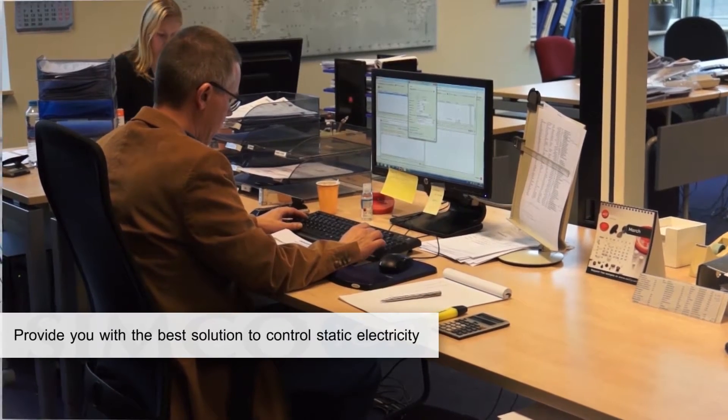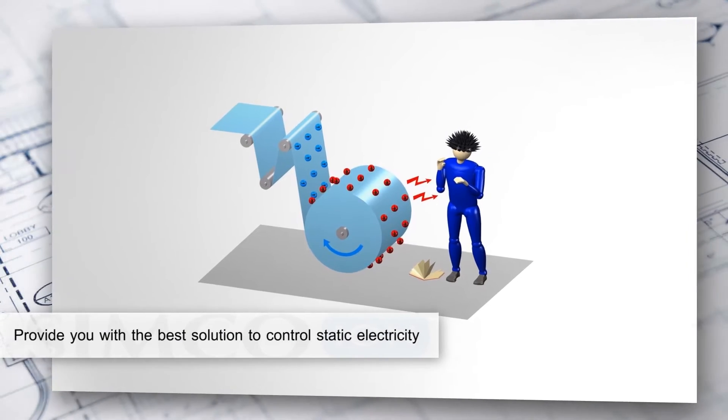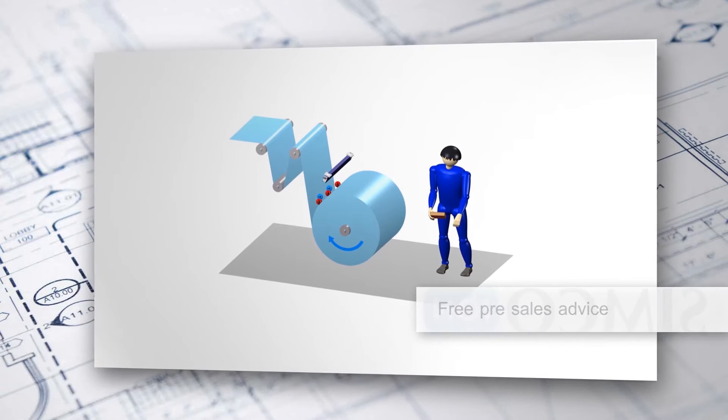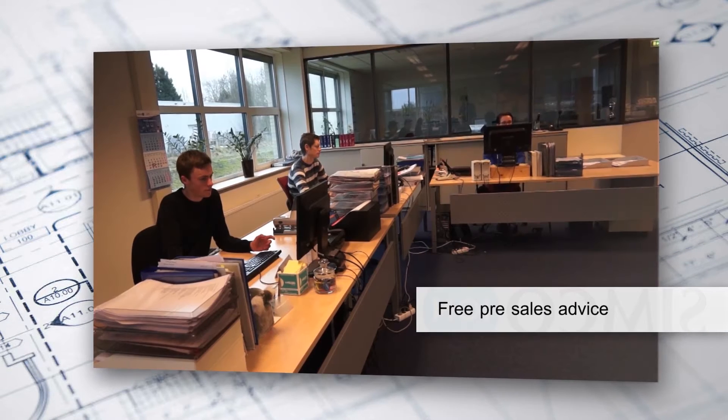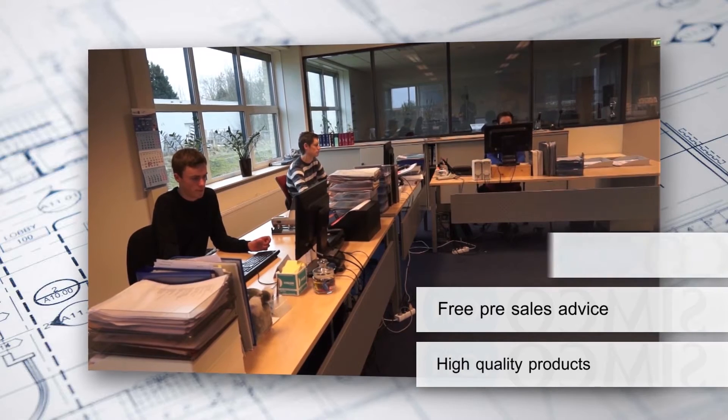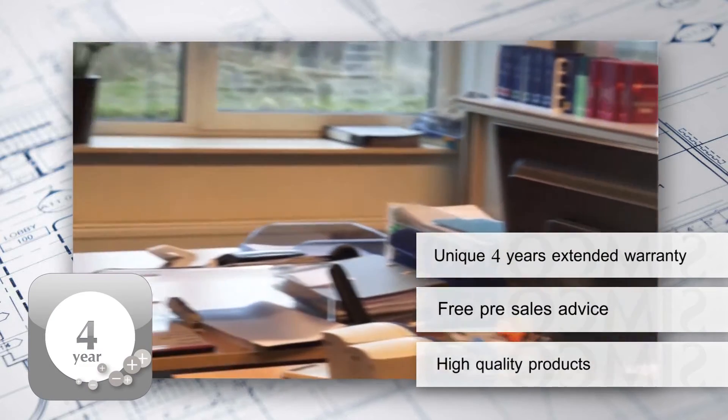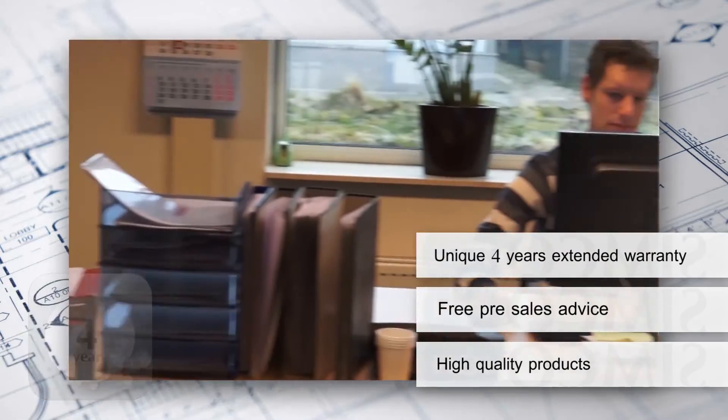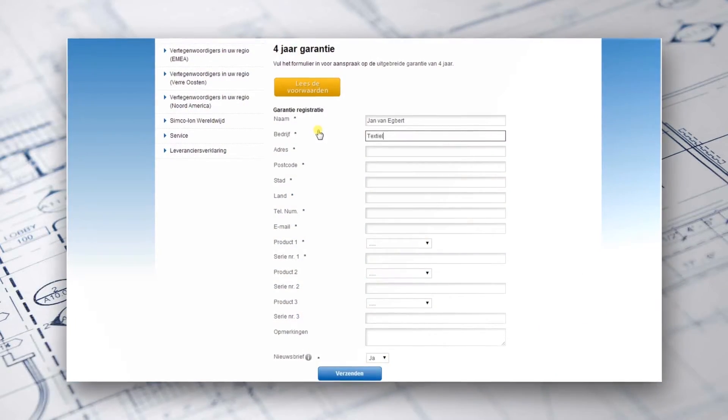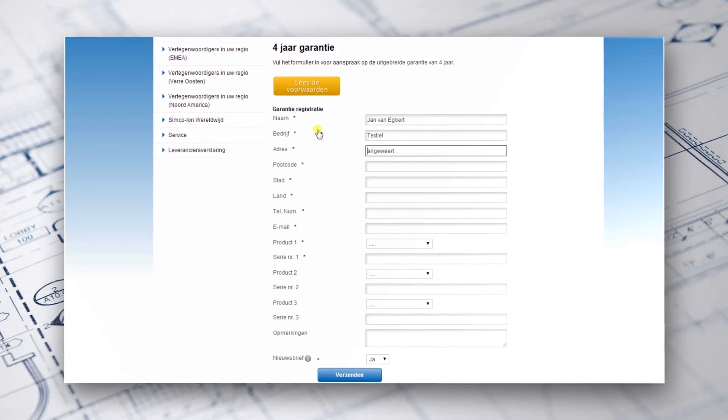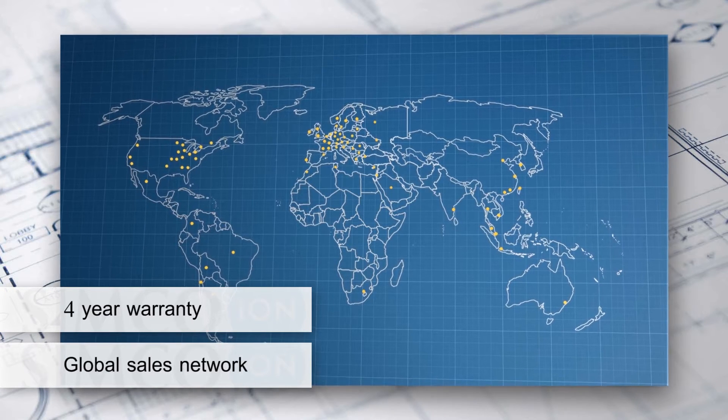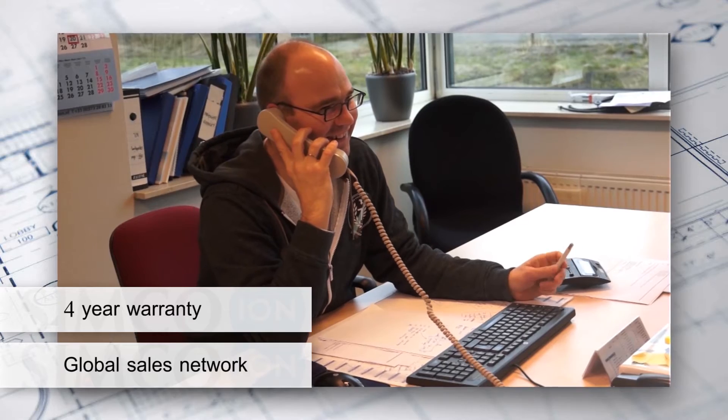It is our mission to provide you with the best solution to control static electricity. Free pre-sales advice by a very experienced sales engineer, high quality product. Simcoe in offers a unique four years extended warranty on all new 24 volt DC products. Simply register your product online to ensure your extended warranty. With a four year warranty and a global sales network, ensure complete satisfaction.